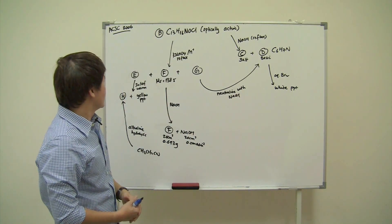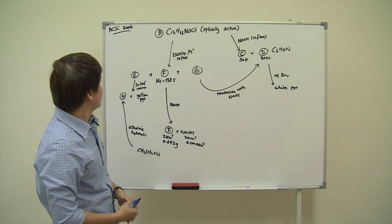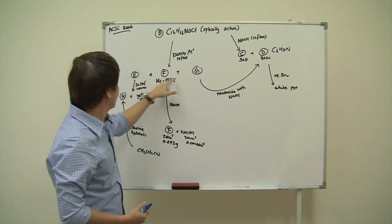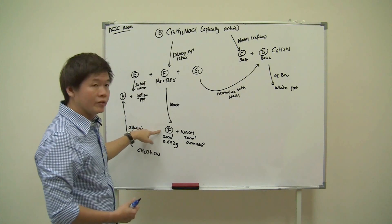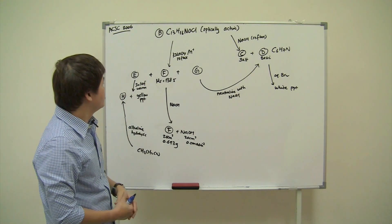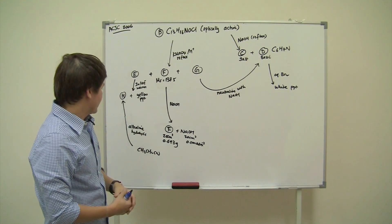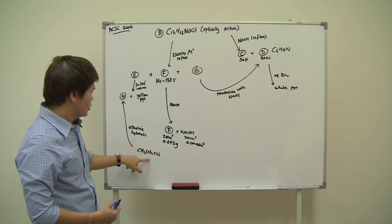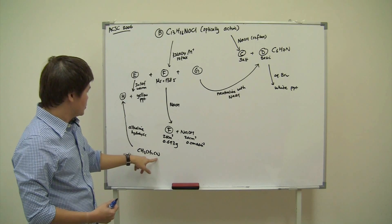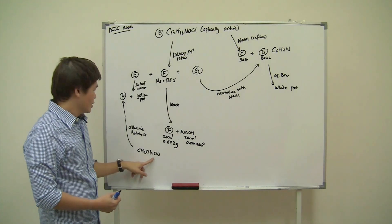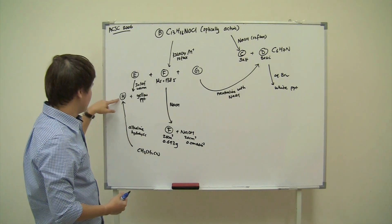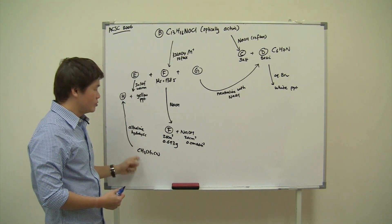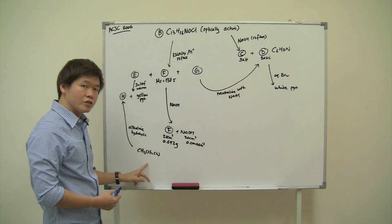So how are we going to solve this question? There are eight unknowns in total. One of the very important clues we have here is a known structure — CH₃CH₂CN, a three-carbon nitrile. It says that alkaline hydrolysis gives compound H. Whenever a question provides this kind of known structure clue, we should always start from that first because the structure is already known to us.